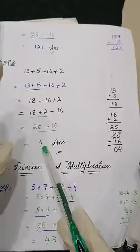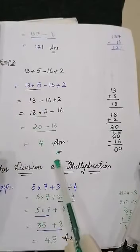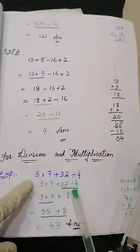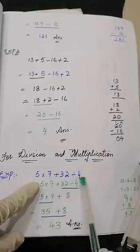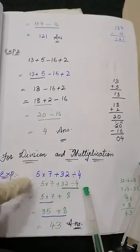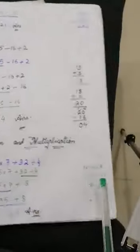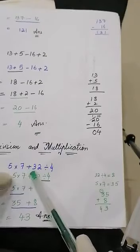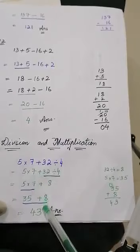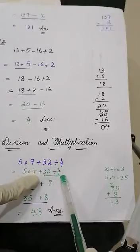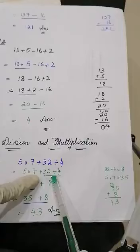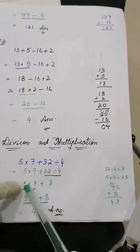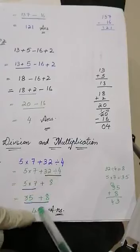These two examples were solved with only addition and subtraction operations. Now moving further to other operations — division and multiplication. Consider the example: 5 multiplied by 7, plus 32 divided by 4. According to the DMAS rule, solve division first. 32 divided by 4 equals 8. I underline 32 divided by 4 because this is the first step — it's the division operation. Next, multiplication: 5 multiplied by 7 equals 35.